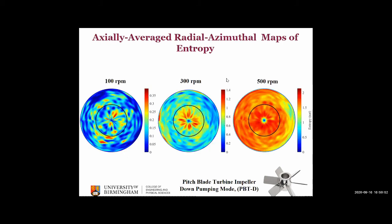This is a top view of the entropy maps, showing the entropy averaged over different axial planes. Similar to the previous slide, the entropy values and dispersion of high-entropy cells increase with impeller rotational speed. At 500 RPMs, the red cells — representing high entropy values and therefore high mixing intensity — are totally dispersed throughout the whole tank, indicating high mixing performance at higher RPMs.